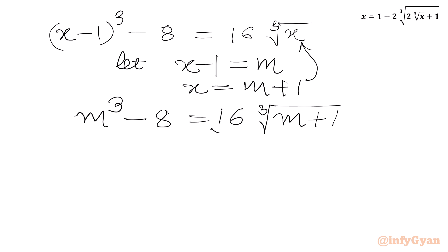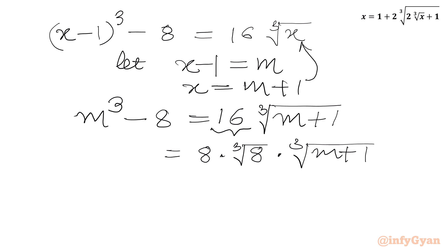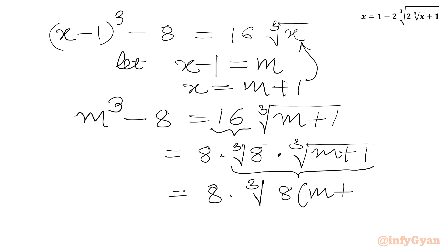Now we will factor 16. So we can write 16 as 8 times 2, and 2 we can write as cube root of 8. Then we have cube root of m plus 1. I will combine these two radicals, so we will get 8 times cube root of 8 times m plus 1.